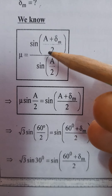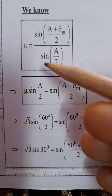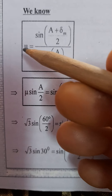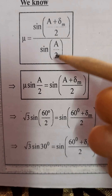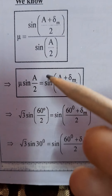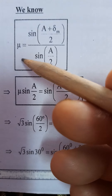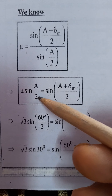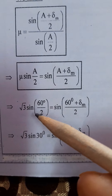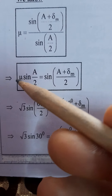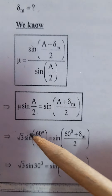We will use the prism formula: mu equals sine of (A plus angle of minimum deviation) divided by 2, all divided by sine of A divided by 2. Rearranging, mu into sine of (A/2) equals sine of (A plus angle of minimum deviation) divided by 2. The value of mu is given as root 3.